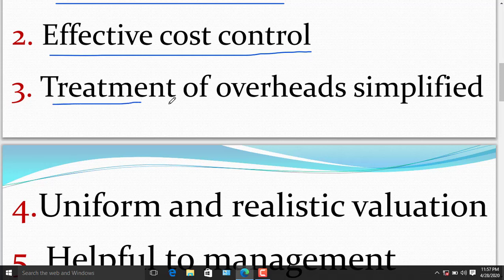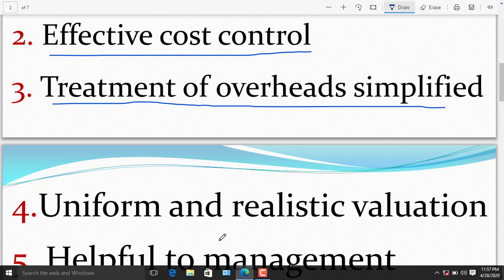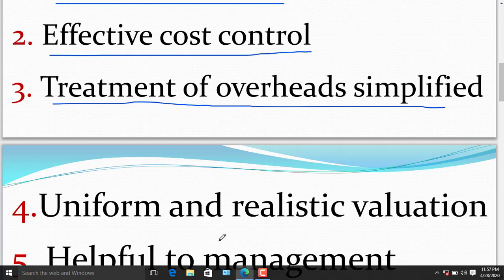The third merit of marginal costing is treatment of overheads simplified. Marginal costing reduces the degree of over and under recovery of overhead due to the separation of fixed overhead from the production cost.